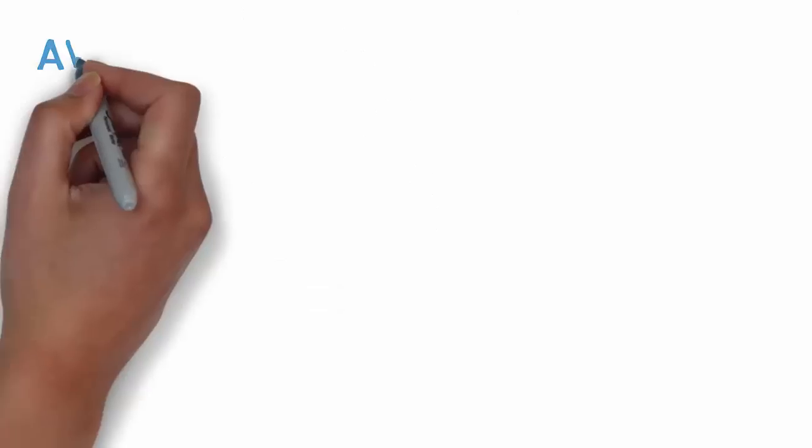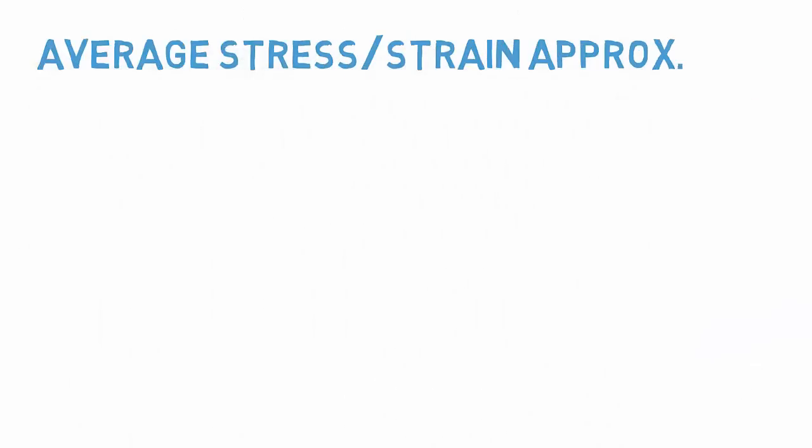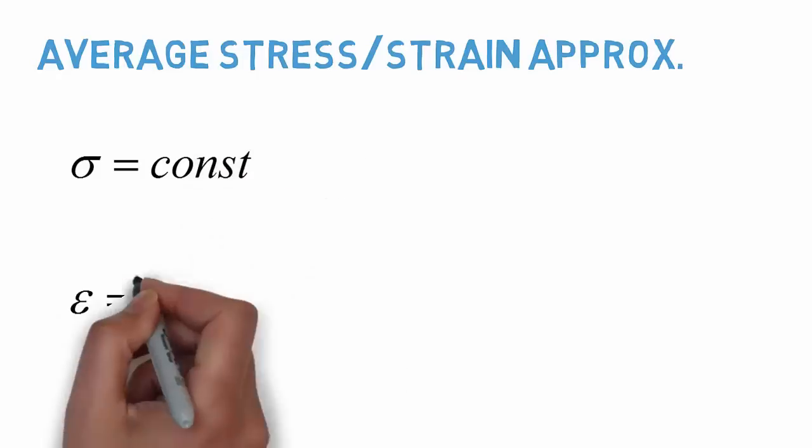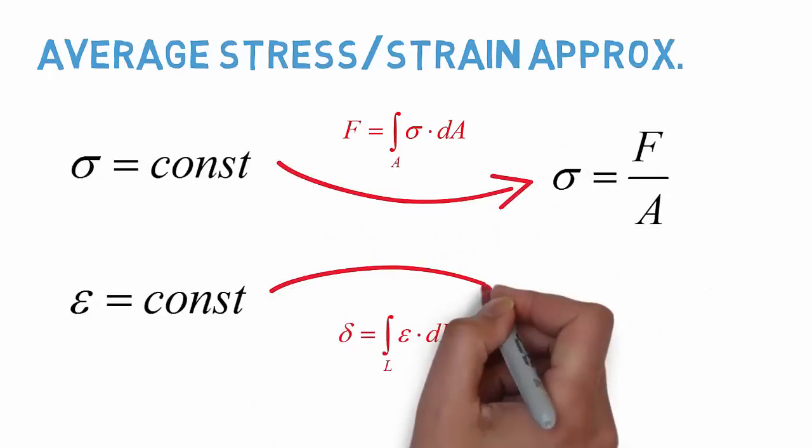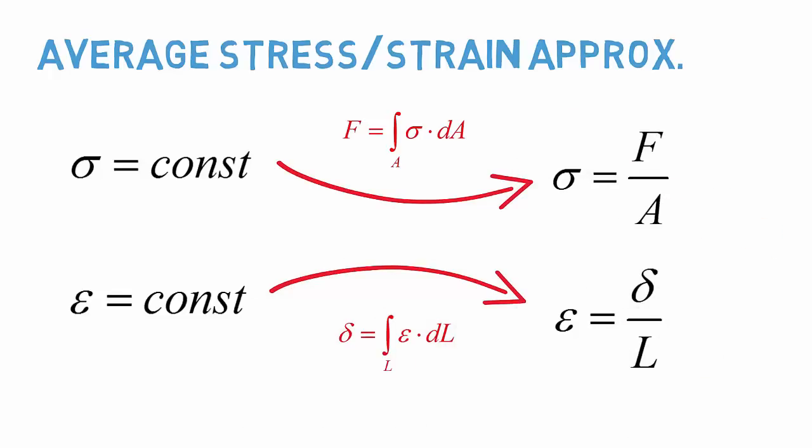We also know that axial loading produces a state of uniform stress and strain, as long as we are sufficiently far away from the boundary conditions according to Saint-Venant's principle. Integration of the stress and strain state become trivial when they are both uniform, resulting in the following two equations.